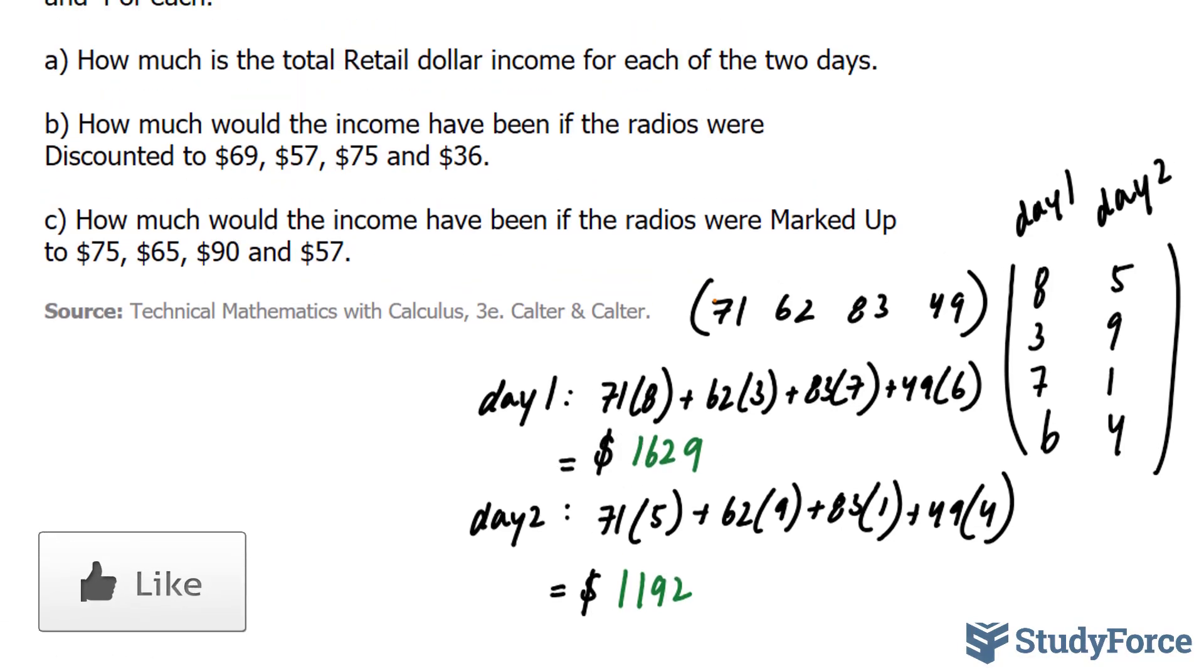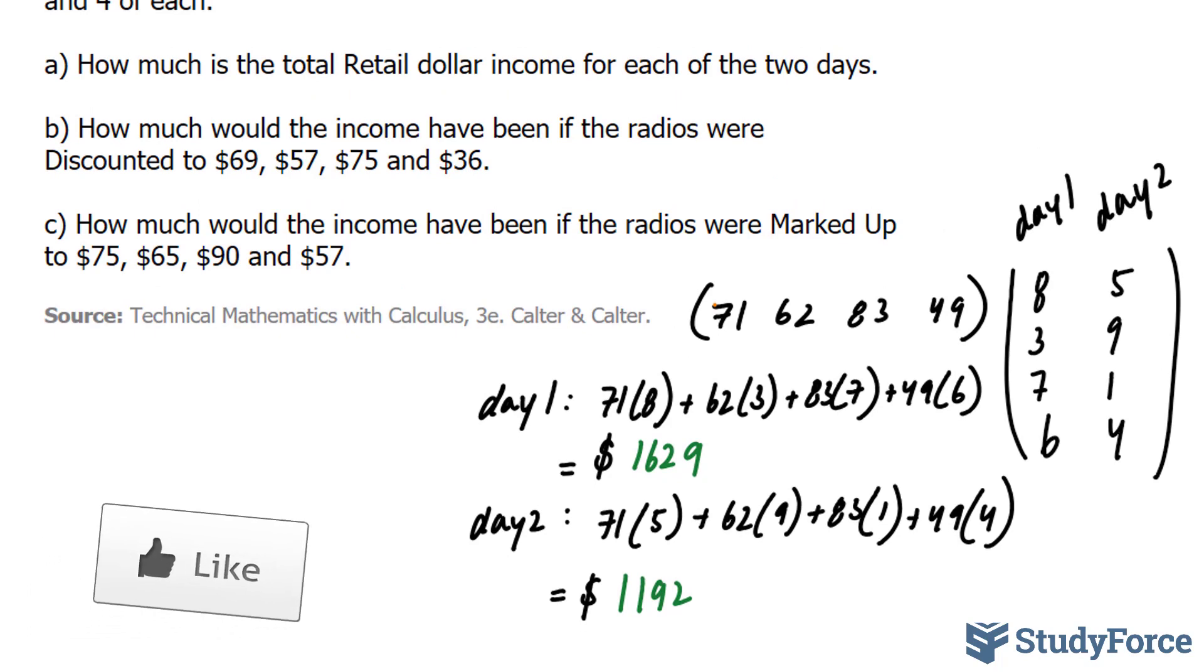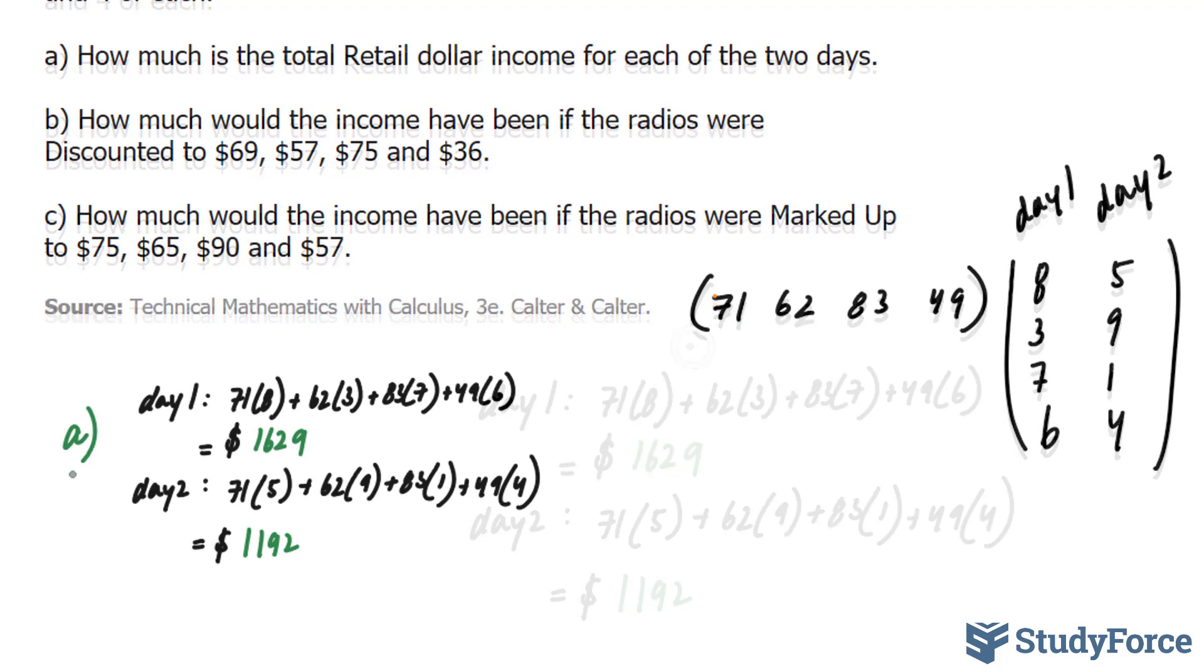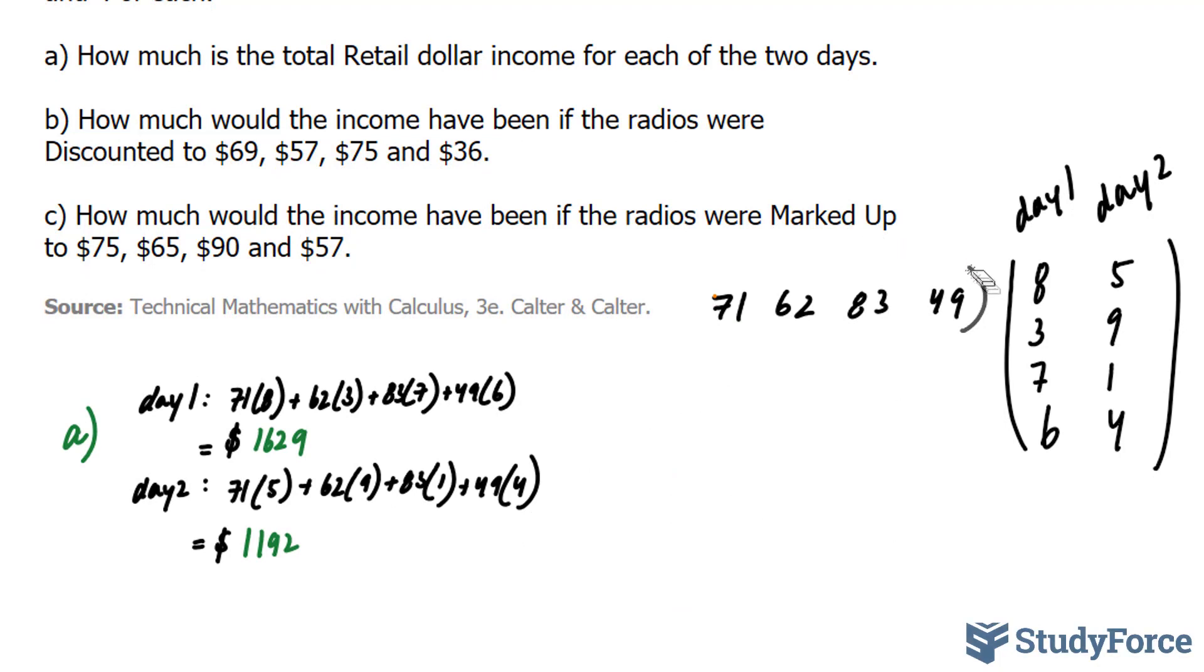Let's move on to part B. How much would the income have been if the radios were discounted to the following prices? So instead of rewriting the row vector and the two column vectors, I'm going to expand my first matrix. And by that I mean adding another row where the prices are now 69, 57, 75, and 36. And you'll literally be doing the exact same calculation as you did in A, but with this brand new row vector.